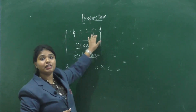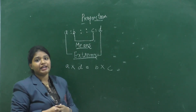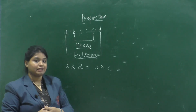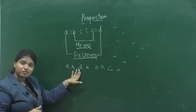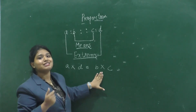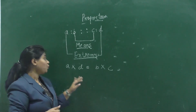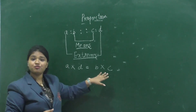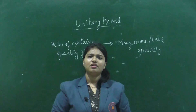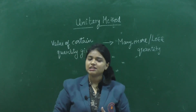Another way to verify proportion: when the product of the extremes is equal to the product of the means, two ratios are in proportion. Using this formula, you can also find any missing term in a given proportion.